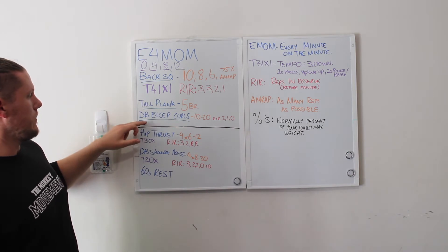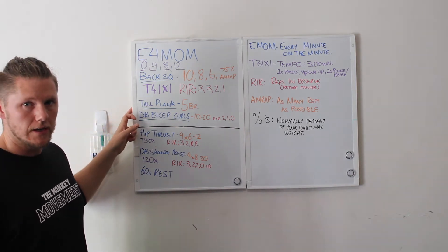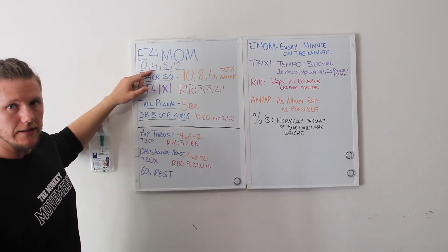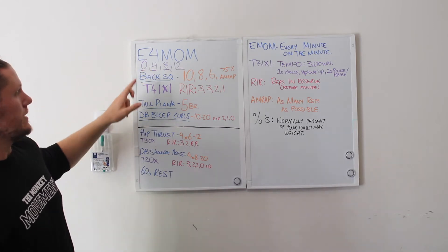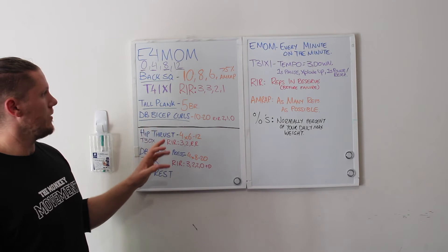You would then do tall plank, dumbbell bicep curls. If you get all of this done in two and a half minutes, you have 90 seconds to rest, and then you do your next set when the time hits four minutes. Rinse and repeat for the rest.